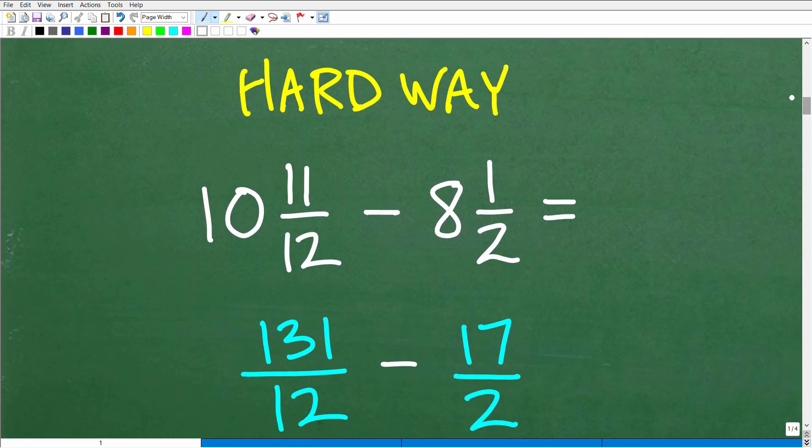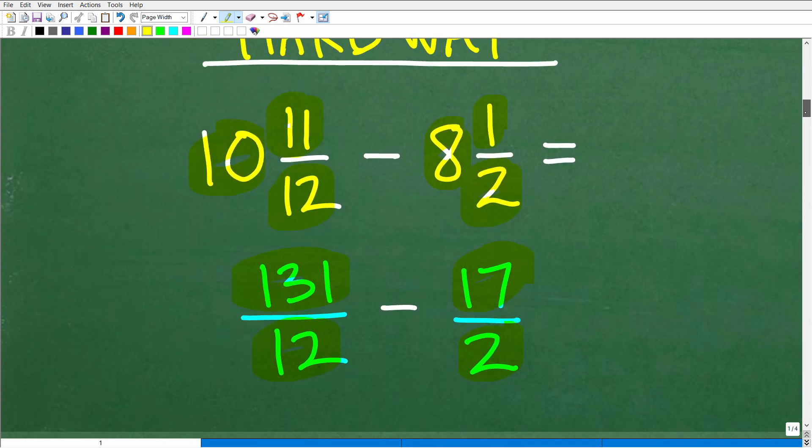What I would say is the hard way to approach this problem is to turn these mixed number fractions into improper fractions. Here we have 10 and 11 twelfths. If I wanted to write this mixed number into an improper fraction, I would go 12 times 10. That's not too bad, right? So 12 times 10, that's 120. Then you're going to take that 120 and add 11 to it. So you're going to have 131 over 12. So now it's a little bit extra work. This 10 here obviously makes this multiplication pretty easy. But then we've got to do the same thing here. So we have 2 times 8, that's 16 plus 1. So this will be 17 halves.